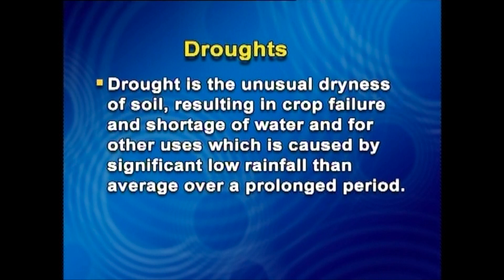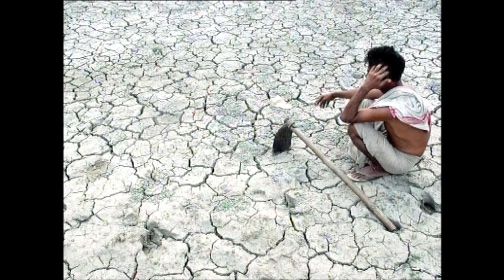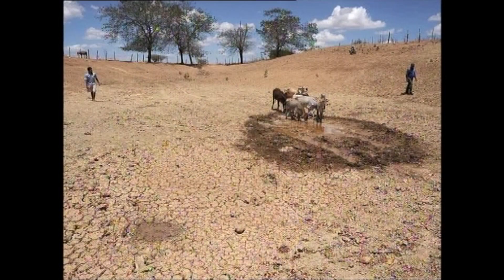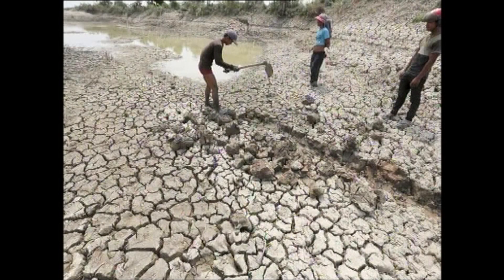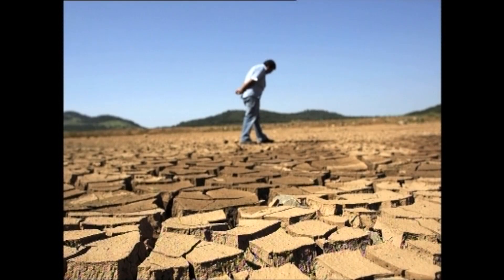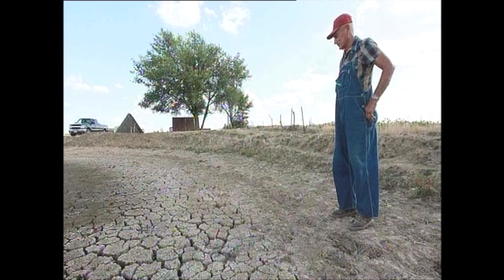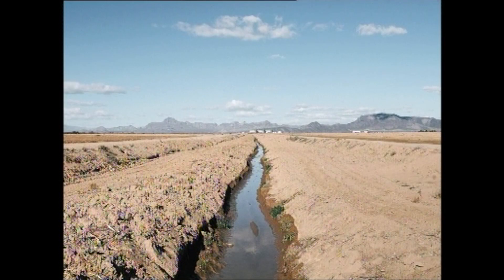Droughts. Drought is the unusual dryness of soil, resulting in crop failure and shortage of water for other uses, which is caused by significantly lower rainfall than average over a prolonged period. Hot dry winds, shortage of water, high temperatures, and consequent evaporation of moisture from the ground can contribute to conditions of drought. A well-known historical drought includes the 1997–2009 Millennium Drought in Australia, which led to a water supply crisis across the country.